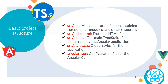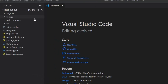Next we need to explore the basic Angular project structure. The source/app folder is the main application folder containing components, modules, and other resources. source/index.html is the main HTML file. source/main.ts is the main TypeScript file bootstrapping the Angular application. source/styles.css applies global styles. And angular.json is a configuration file for the Angular CLI.